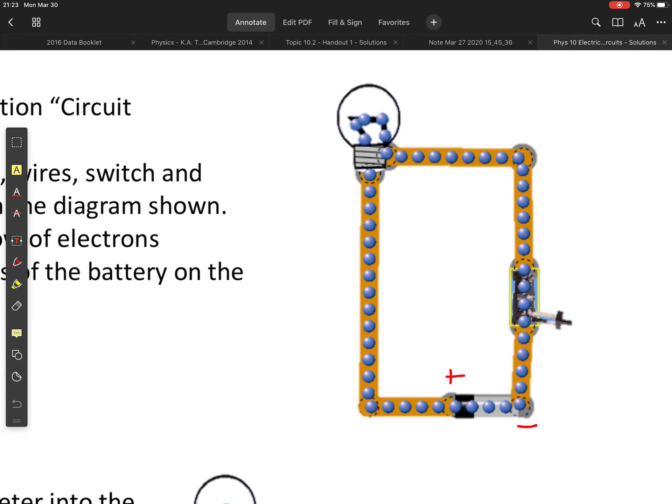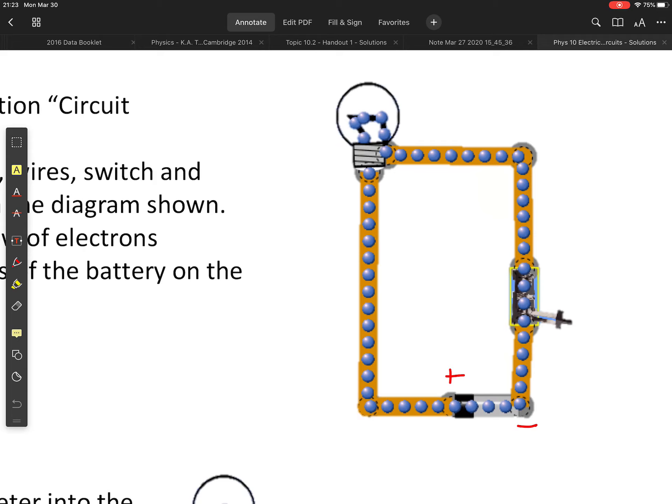Okay, here we have a simple circuit with a light bulb, a battery, and a switch and we're asked to label the positive and negative poles of the battery and there they are.